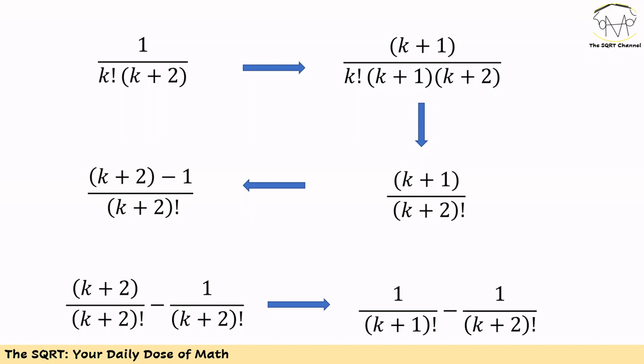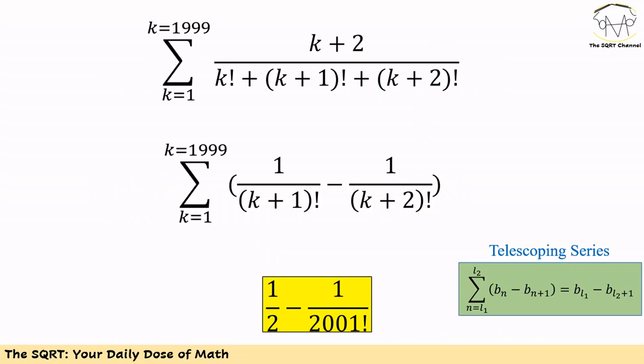We want to write the denominator as (k+2) factorial. The missing factor is k+1, so we multiply both numerator and denominator by k+1. The denominator becomes (k+2) factorial and the numerator is k+1, which can be written as (k+2) minus 1. This lets us split the fraction into 1 over (k+1) factorial minus 1 over (k+2) factorial.